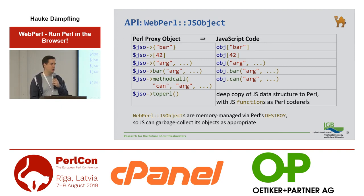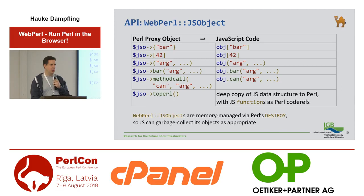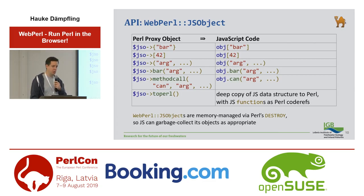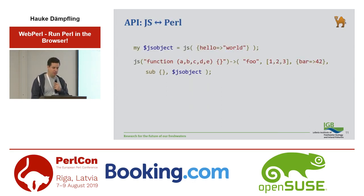Objects of the class WebPerl::JSObject — you can use them like a hash reference, like an array reference, like a code reference, or like a normal Perl object, meaning you can call methods on it. What happens in the background is that when you do these operations, it builds a string of JavaScript code that does the equivalent operation in JavaScript. So in Perl it looks like you're working with a regular Perl object, but in reality in the background you're working with a JavaScript object wrapped inside that proxy object.